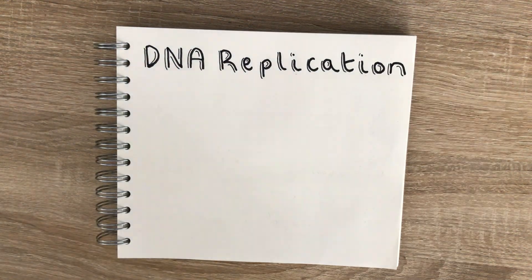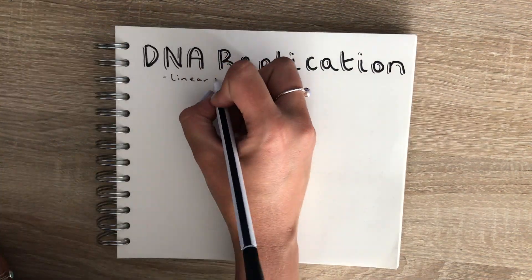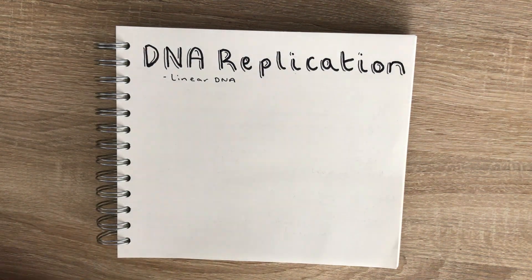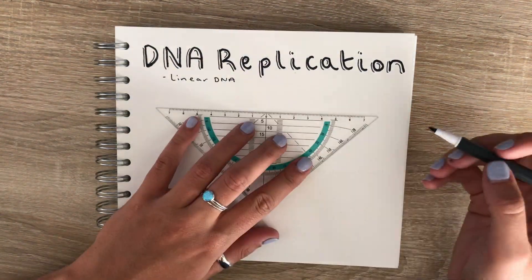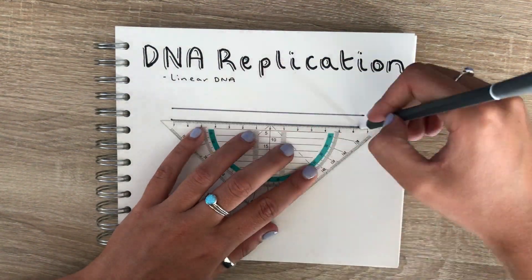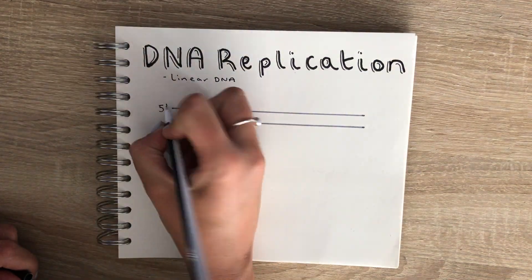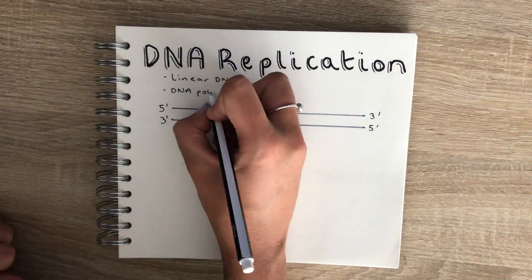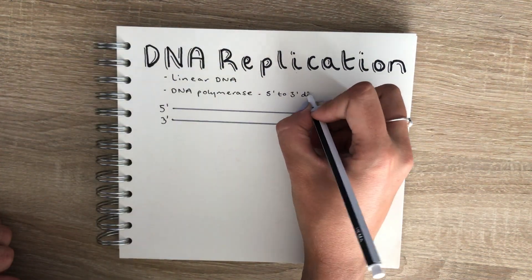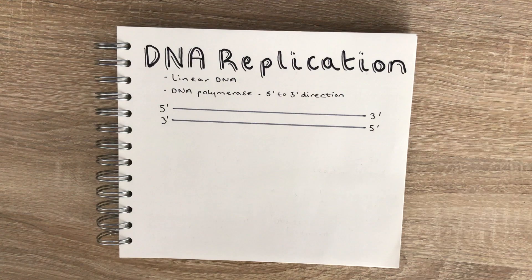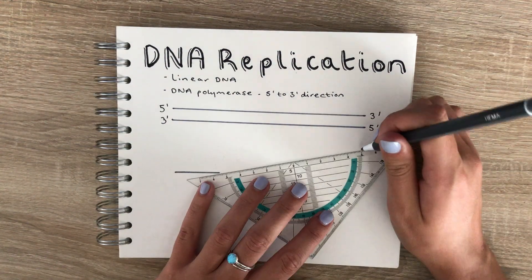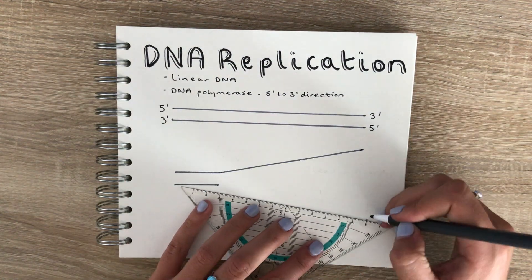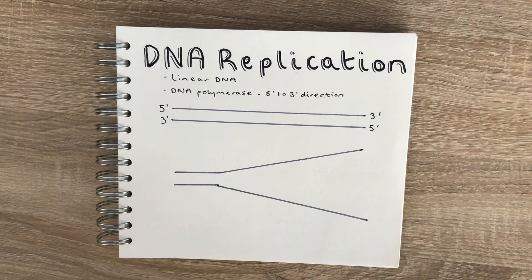Human DNA is linear, and one of the problems we have is that DNA polymerase can only make DNA in a 5' to 3' direction. But because DNA contains two strands — one that runs 5' to 3' and another that runs in the opposite direction, 3' to 5' — the replication of these two strands has to occur differently.